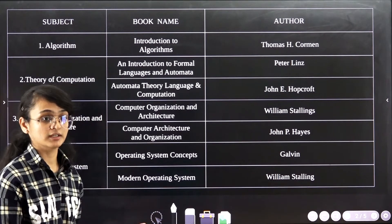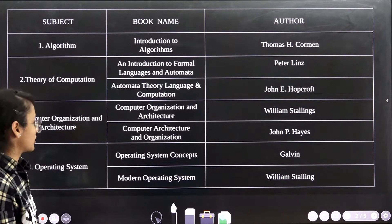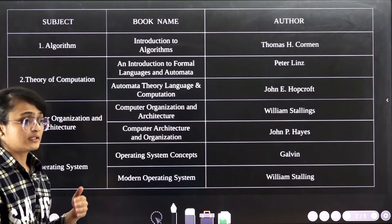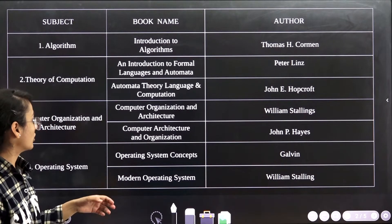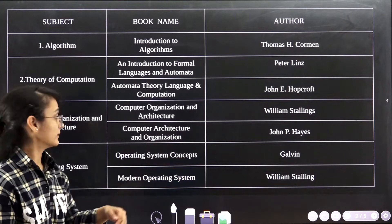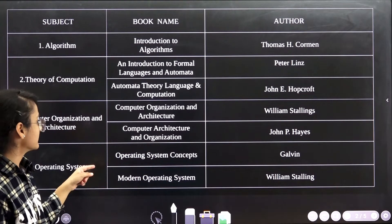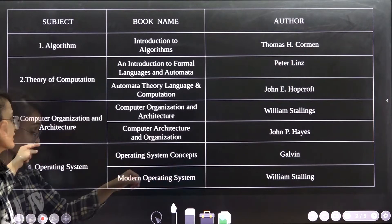The next subject is Computer Organization and Architecture. This is a really typically hard subject for us to study. So the book that I follow is Computer Organization and Architecture by William Stallings, and another book that I follow is Computer Architecture and Organization by John P. Hayes.